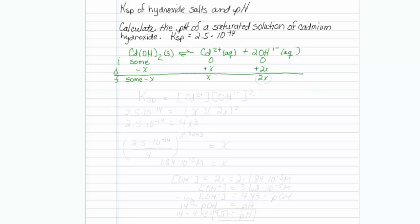The Ksp has to equal the cadmium 2 plus concentration times the hydroxide concentration squared. So 2.5 times 10 to the minus 14 must equal x times 2x quantity squared, which is equal to 4x cubed.